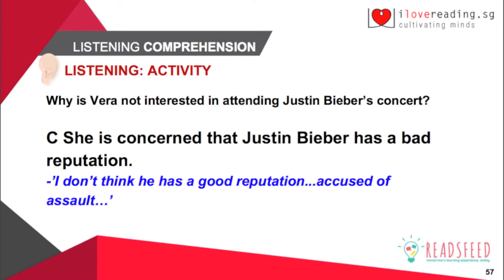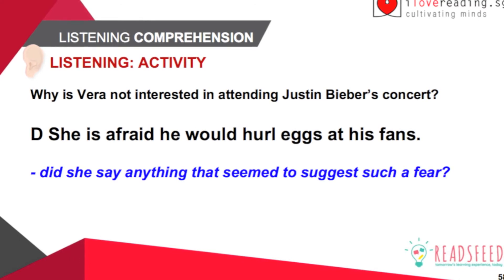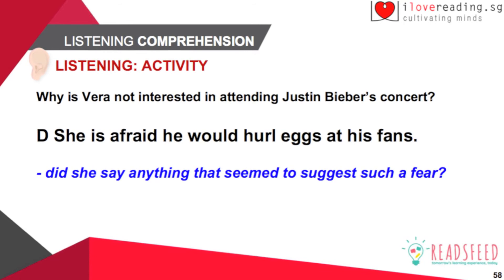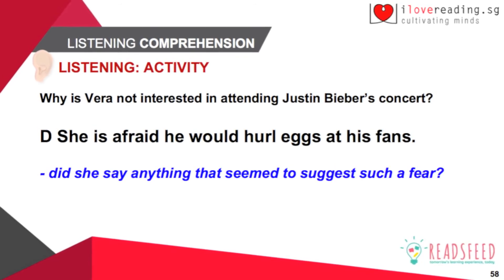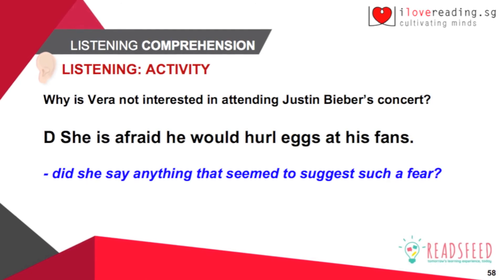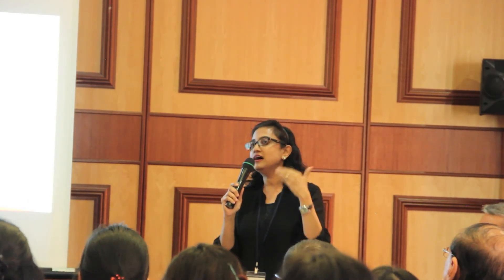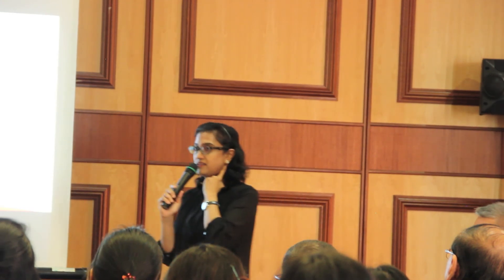She's concerned that Justin Bieber has a bad reputation — this comes close. 'I don't think he has a good reputation, accused of assault.' But if they didn't quite get that — 'she's afraid he would hurl eggs at his fence.' Did she say anything to suggest such a fear? No. He hurled eggs at the neighbour. So if they hear half-past-six kind of thing — they hear half of it, hear the other half, and think, 'oh yeah, I heard eggs, this is the one.' So we have to get them to understand: listen carefully, do you hear fully? That's something we can help them with.